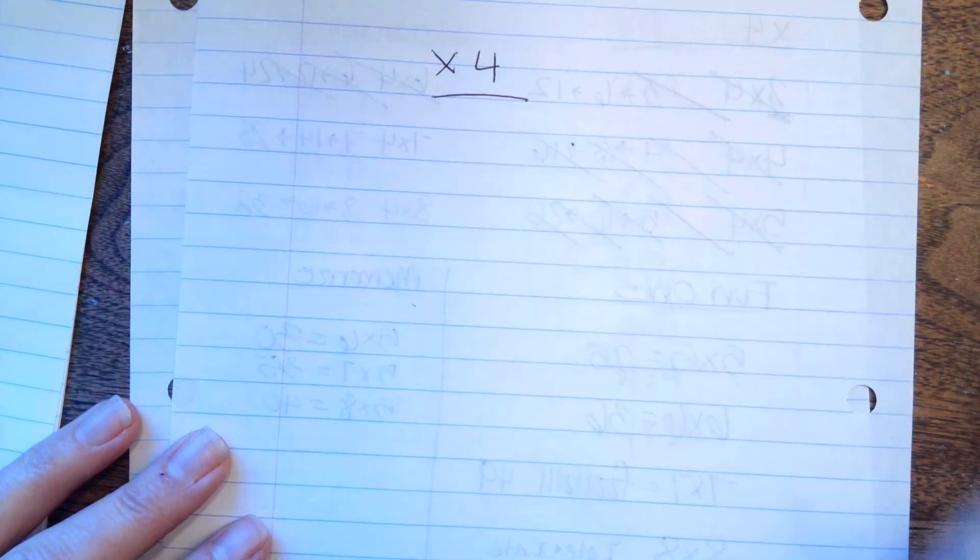Okay, so we are going to do times 4 strategy. The strategy is double the number and double it again.